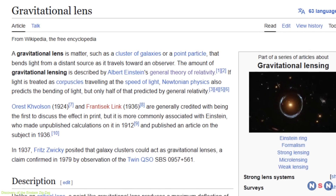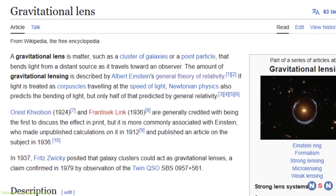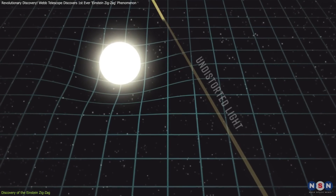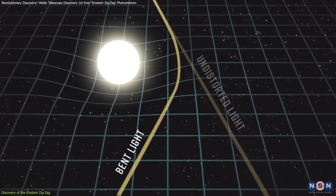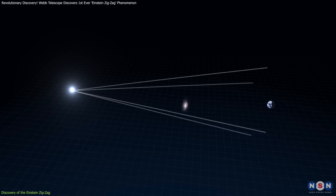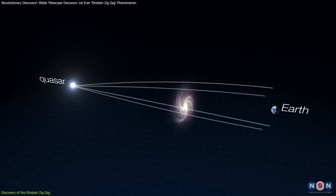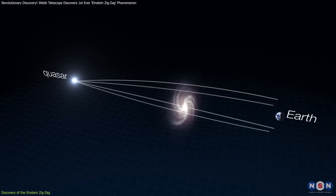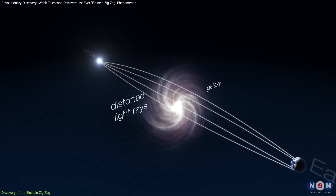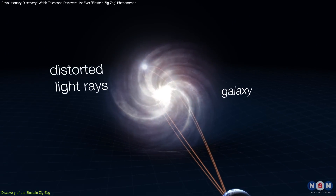Gravitational lensing, the phenomenon responsible for this spectacle, is a direct prediction of Albert Einstein's general theory of relativity. According to this theory, massive objects such as galaxies warp the fabric of spacetime. This curvature bends the path of light passing nearby, effectively acting as a lens.